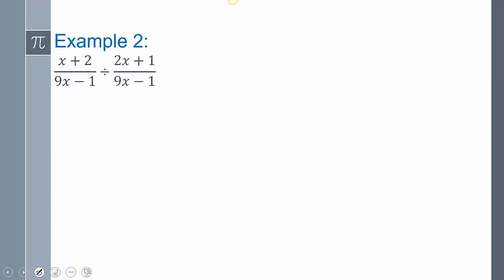So for this one, example number 2, we're going to reduce this. And so simplifying this, well, it's division, so I've got to change it into multiplication. And now factors reduce. So the 9x minus 1s, those are going to cancel out, and so I'm going to be getting x plus 2 over 2x plus 1.